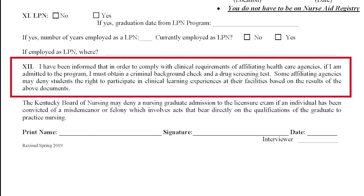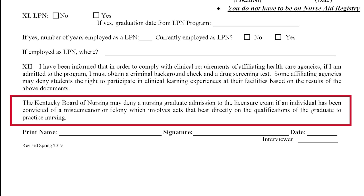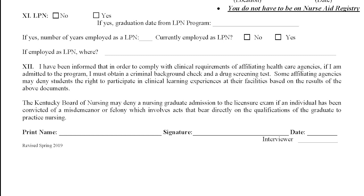The next step is to read these statements. 'I have been informed that in order to comply with clinical requirements of affiliating health care agencies, if I am admitted to the program, I must obtain a criminal background check and drug screening test. Some affiliating agencies may deny students the right to participate in clinical learning experiences at their facilities based on the results of the above documents.' The Kentucky Board of Nursing may deny a nursing graduate admission to the licensure exam if an individual has been convicted of a misdemeanor or felony involving acts that bear directly on the qualifications of the graduate to practice nursing. This means you could graduate with top honors, but if there is something on your record, the Board of Nursing can refuse to allow you to sit for the exam — we do not have control of that, but we are legally required to let you know. You should be aware of this risk before starting the program. Then print your name, sign it, and date it.